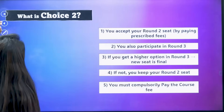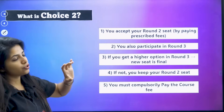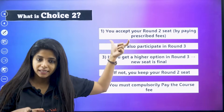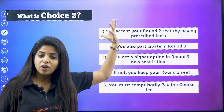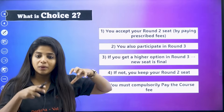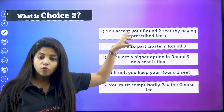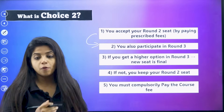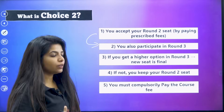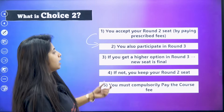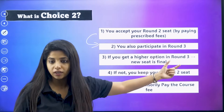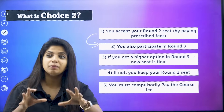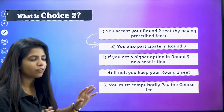What exactly is choice two? As I told you, choice two is where you accept your seat. Suppose we are in round two now — your round two seat would be accepted and you would also be allowed to participate in round three. Now suppose when you go to round three and if you get a higher option in round three, that new seat will be the final one.